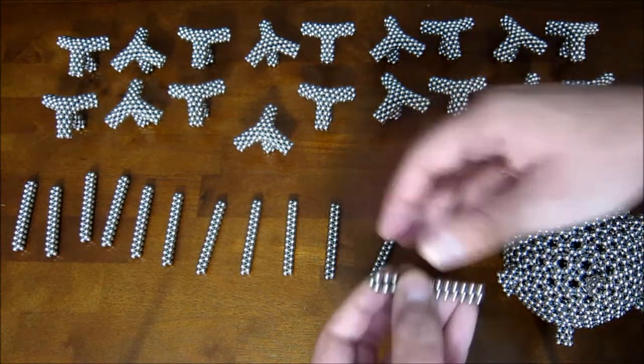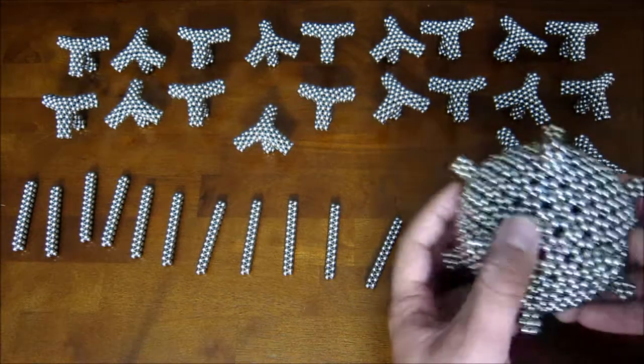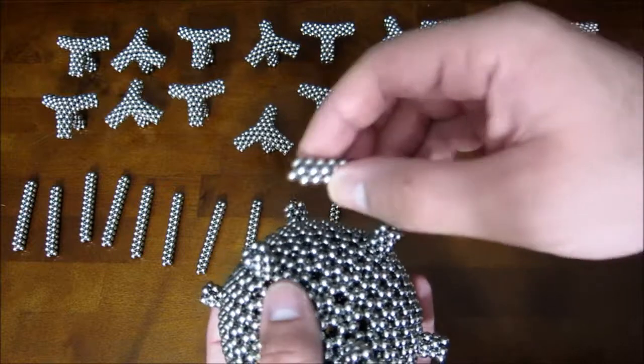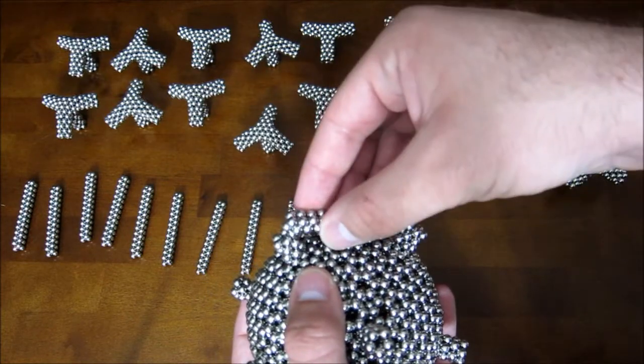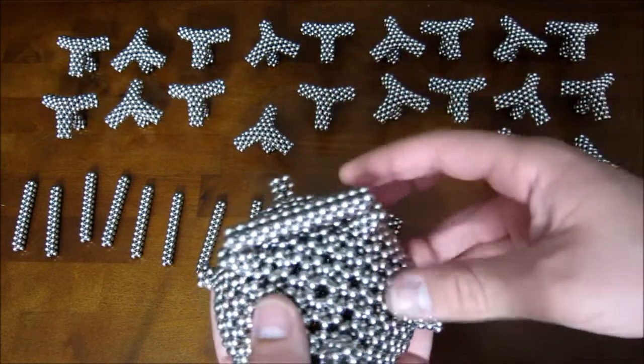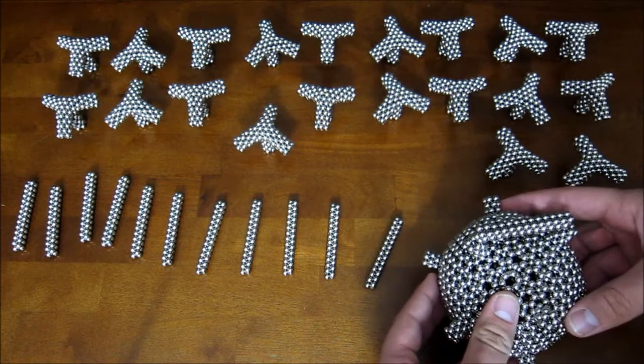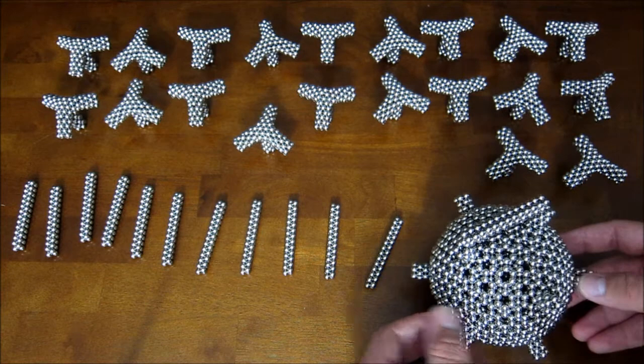And so you want to take these and attach them on the sphere so that they bridge from one stack of pentagons to the next. Just like that. And you want to take all of them and you'll end up building an icosahedron frame when you do that.